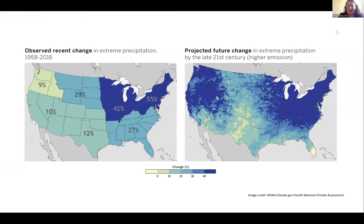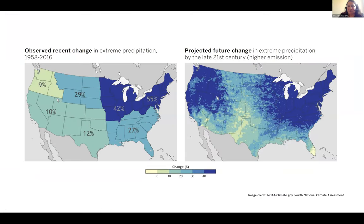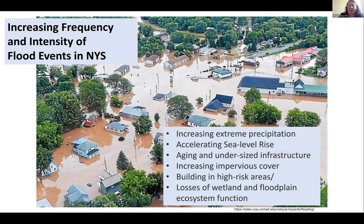This on the left is showing existing change that has occurred in the past regarding extreme precipitation events — notice how big the changes are in the Northeast. The right is showing projections. Precipitation events are increasing in frequency and intensity, particularly here in the Northeast. Combining that with accelerated sea level rise, aging and undersized infrastructure, increasing impervious cover, building in high-risk areas, and losses of wetland and floodplain ecosystem function — there's an increase in flood risk in many parts of New York State.